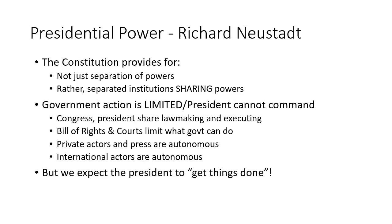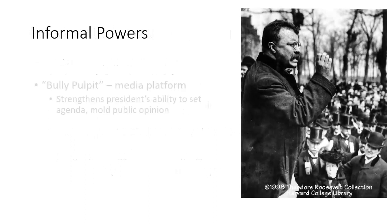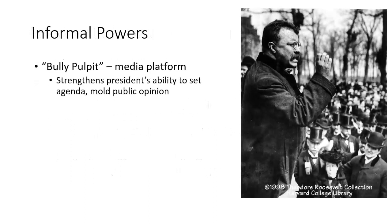Actors on the international stage are also autonomous — they do not take orders from the president. But we expect the president to get things done, which means we expect the president to find ways to work with Congress, the courts, private actors, and actors on the international stage in order to solve problems. The informal powers of a president can aid a president in working with others to get things done.